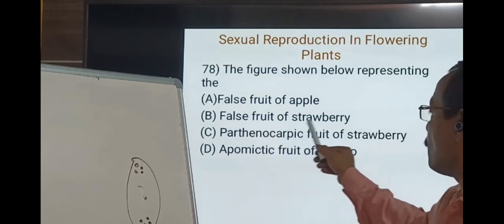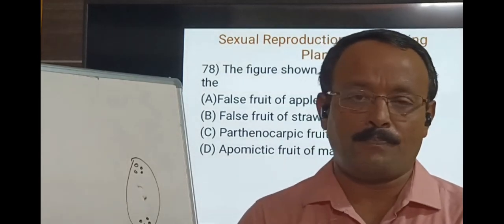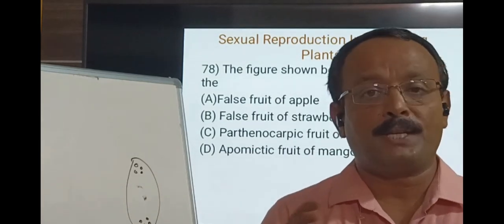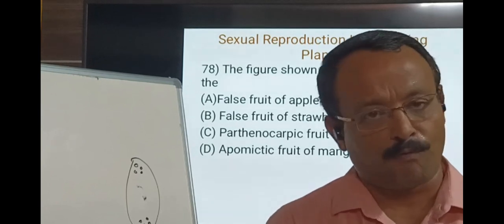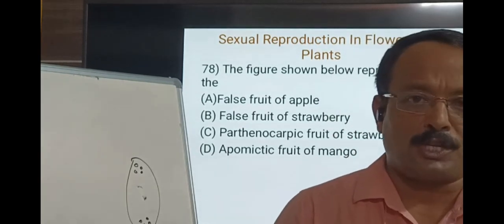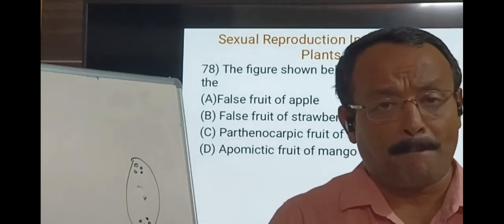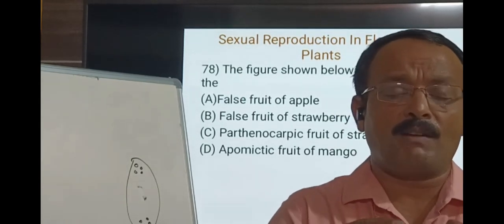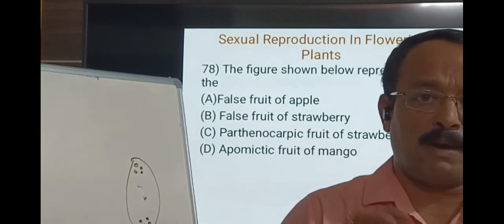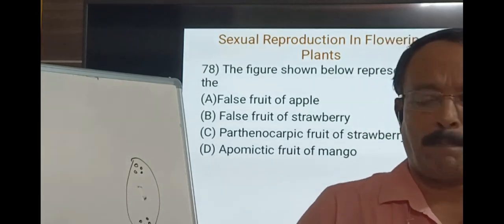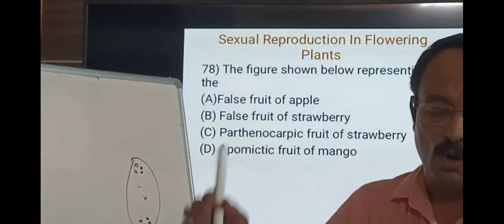The figure shown is a false fruit of strawberry. Fruits are categorized into two types: true fruits, which develop from the ovary after fertilization, and false fruits, which develop from any part other than the ovary. In apple and strawberry, the thalamus is the edible part, making it a false fruit. Such fruits that develop from the thalamus or another part other than the ovary are called false fruits.